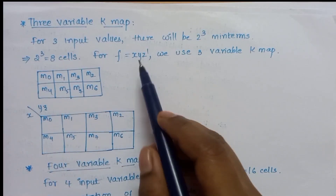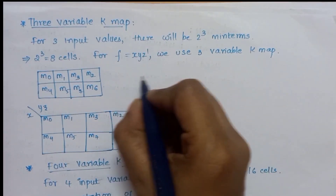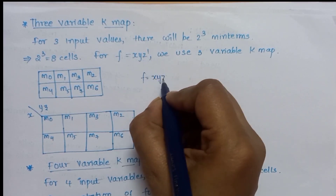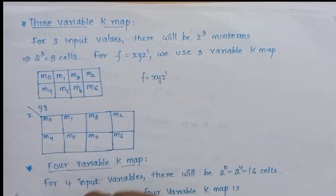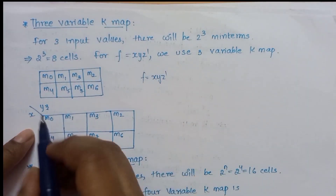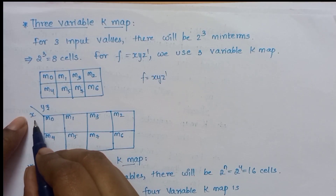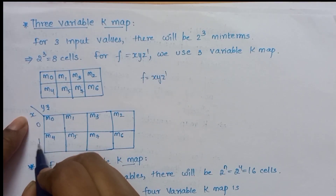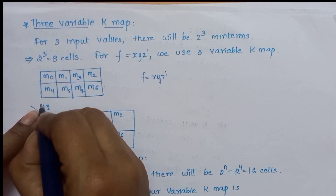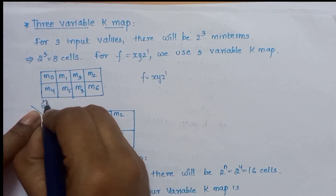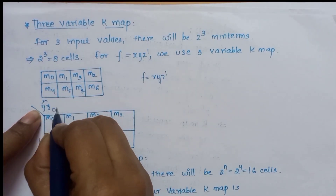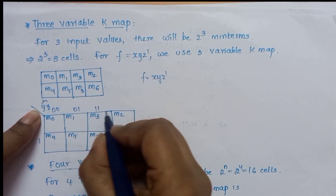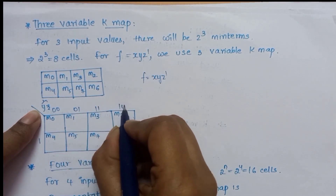Let's take an example with three variables. F is equal to xyz'. Here, x takes values 0 and 1 in the rows, and yz is a 2-variable combination in the columns. The yz column values are: 00, 01, 11, 10 — following Gray code order.